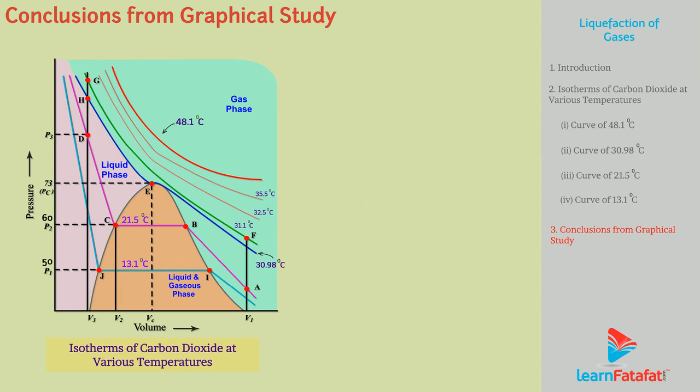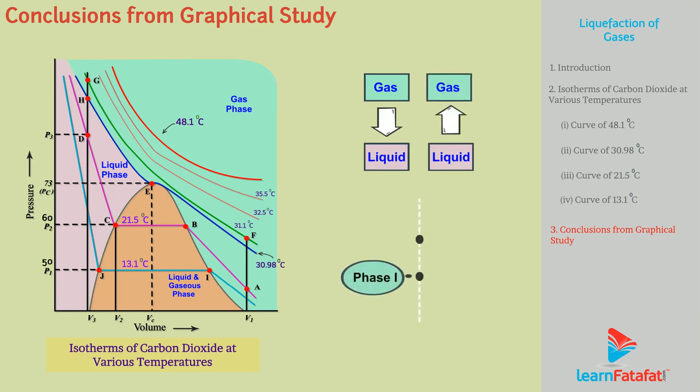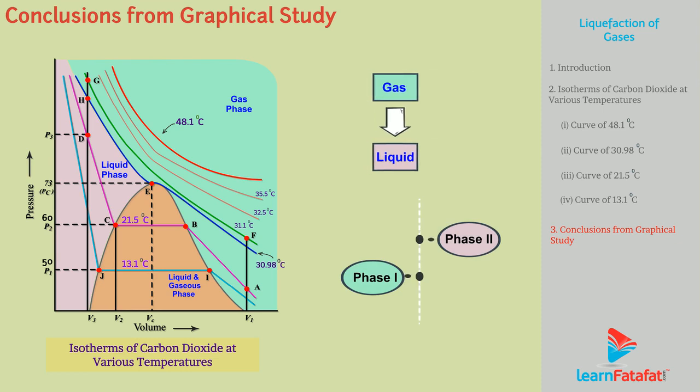It is possible to change a gas into liquid or liquid into gas by a process in which there is only one phase anytime. For example, gas phase can be converted to liquid phase by going via the curve A, F, G to H.